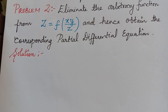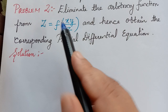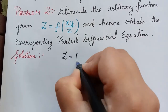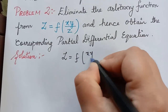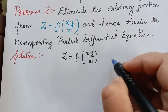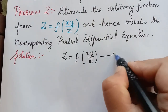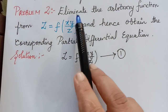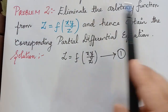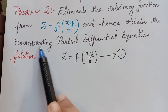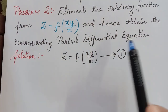Dear students, this is a continuation video of the previous lecture on the topic of partial differential equations. We are finding partial differential equations by eliminating the arbitrary function. Here it is given that z is equal to f of xy by z. Let us mark this given equation as equation 1. From this we have to eliminate the arbitrary function and obtain the corresponding partial differential equation.